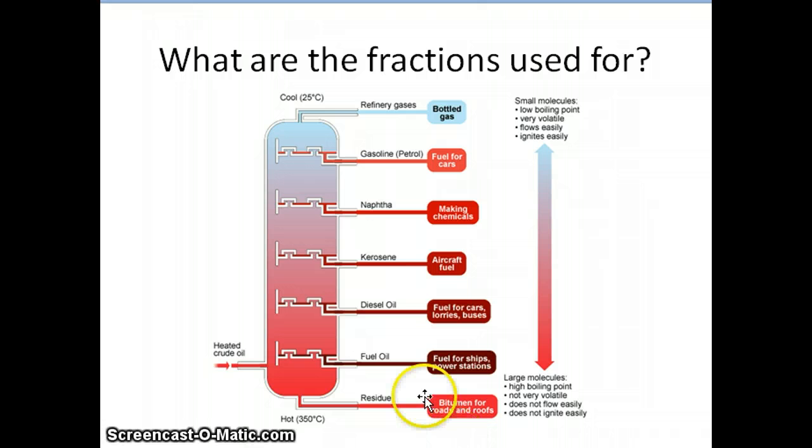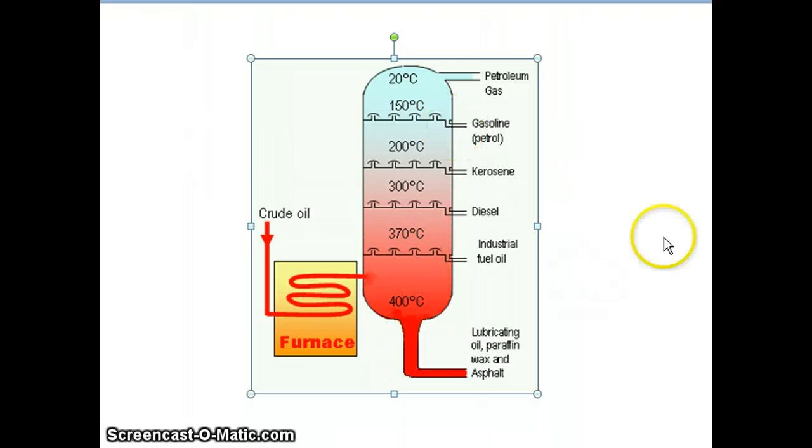Fuel oil is used for ships and power stations, and the residue is used for roads. As you can see, the different boiling points of each of the fractions. Also, you need to remember that the lower the boiling point, the shorter the chain molecule.